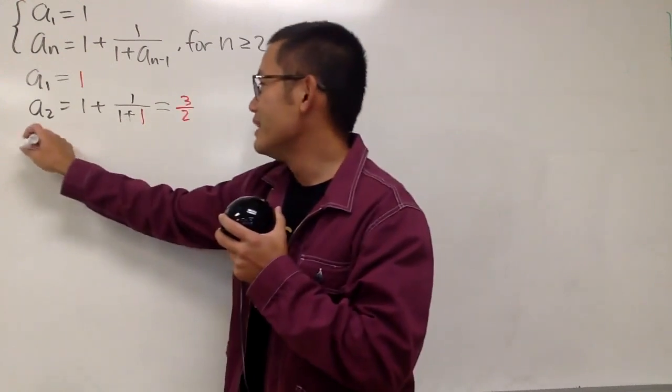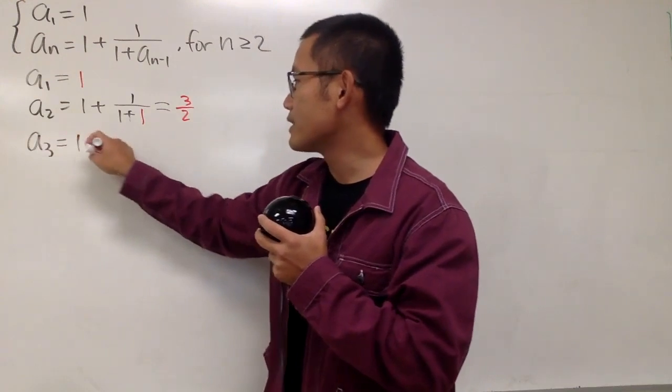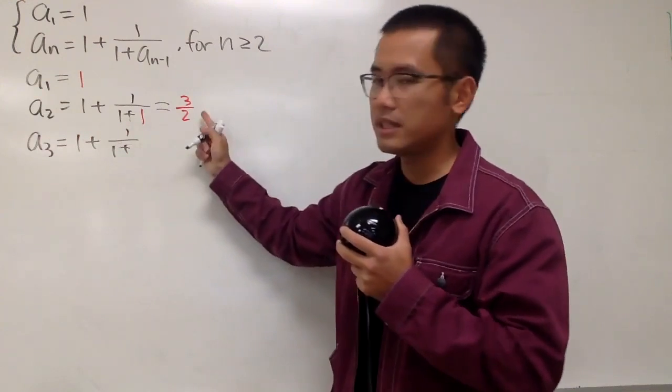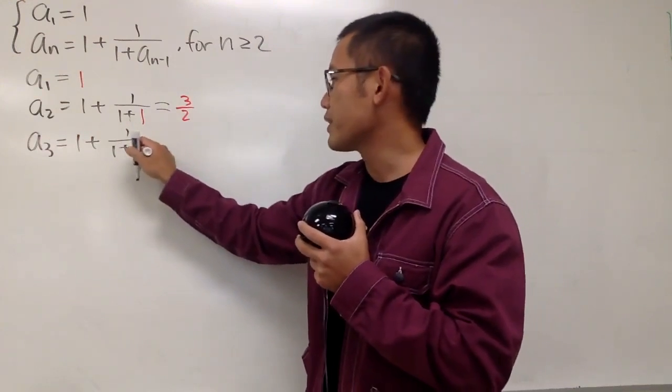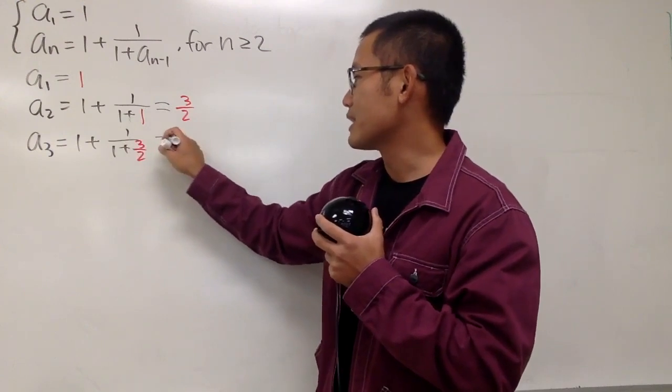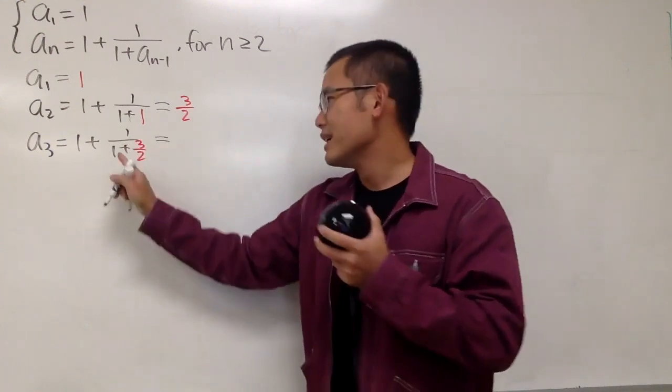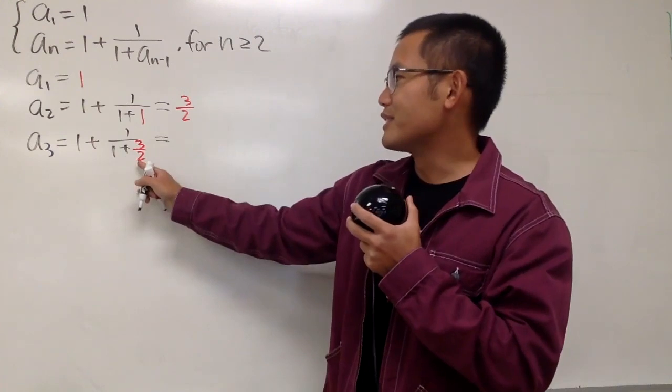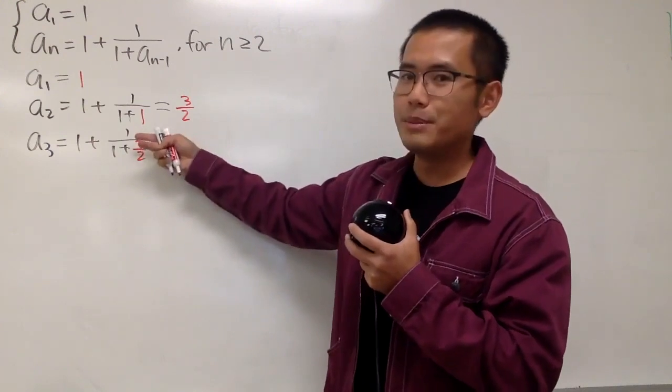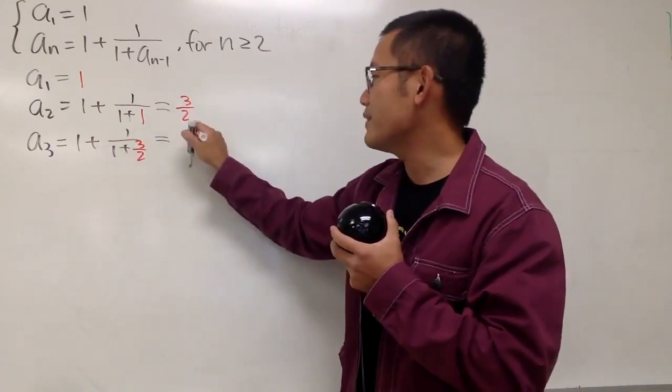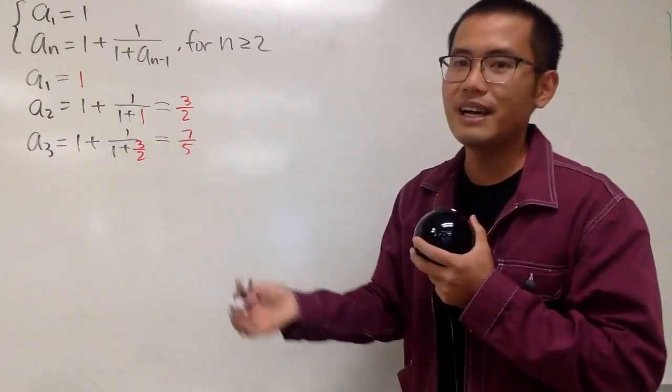And of course, keep on going. This right here, a₃, it's going to be 1 plus 1 over 1 plus the previous term, which is 3/2. Just put it down here, and we are dealing with some complex fractions, but it's not so bad. To do this, of course, this is going to be 5/2, do the reciprocal, it's 2 over 5, plus 1 is going to be 7 over 5, like this, right?